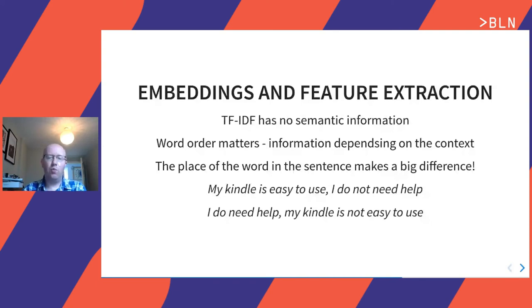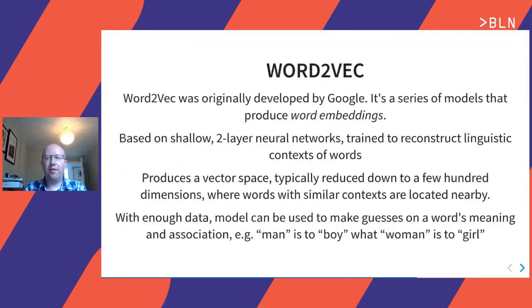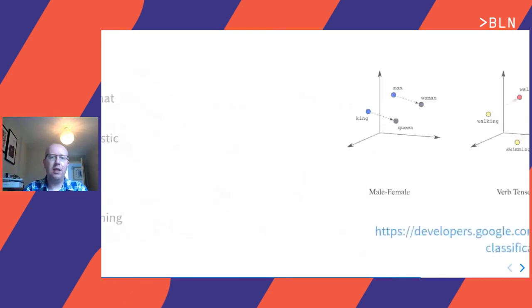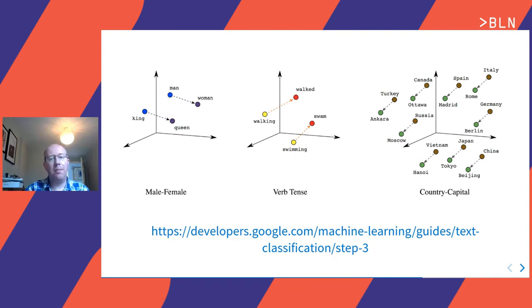Embeddings approaches to be aware of: Word2Vec and GloVe are some of the simpler ones; ELMo, BERT, and GPT-2 are more advanced — no time to go into those, but go Google them later. Word2Vec was originally developed by Google, based on a two-layer neural network. It gives you a vector space that includes semantic information. If we train it on enough text, we can say 'man is to boy what woman is to' and it can predict 'girl'. It's able to handle country-to-capital relationships, verb tenses, and even irregular verb tenses — 'walking is to walk what swimming is to' and it can predict 'swam'. So it's really powerful for working on real text.